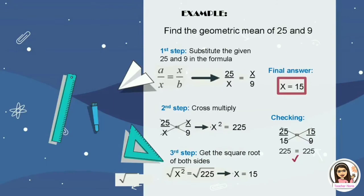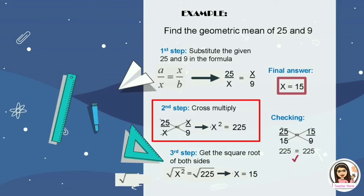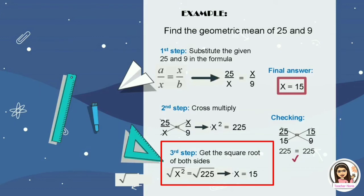Let's try finding the geometric mean of 25 and 9. First step: substitute the given values into the formula a over x equals x over b, giving us 25 over x equals x over 9. Second step: cross multiply. 25 multiplied by 9 equals 225, and x multiplied by x equals x squared. Third step: get the square root of both sides. The square root of x squared is x, and the square root of 225 is 15. Therefore, the final answer is x equals 15.